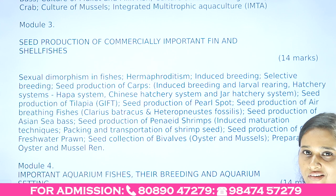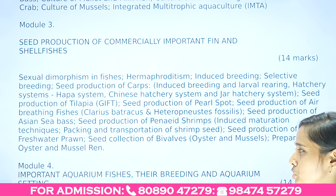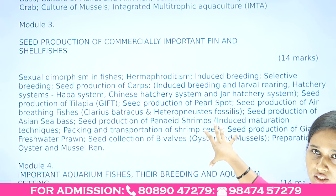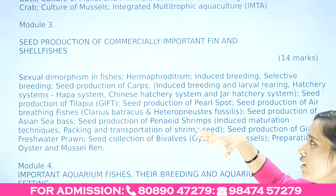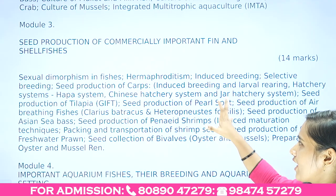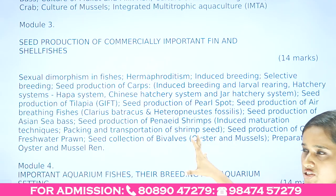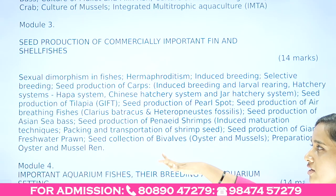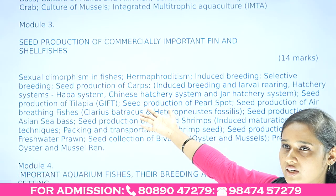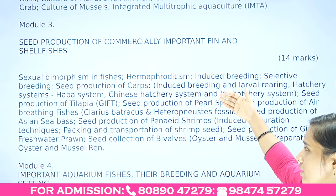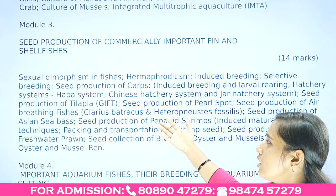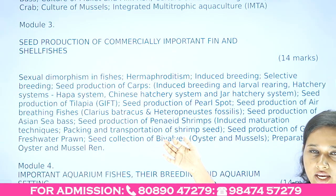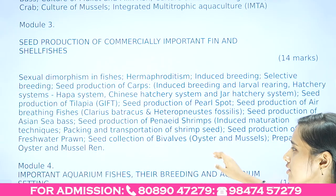Module 3 also covers seed production of giant freshwater prawns and various bivalves — oysters and mussels — including oyster-related mussel ren preparation. Sexual dimorphism and species seed production are described.